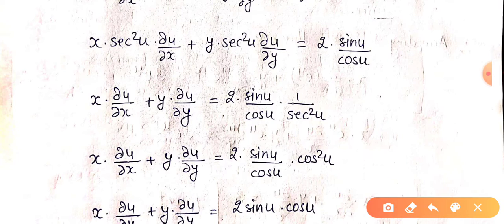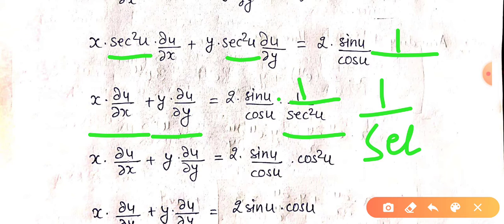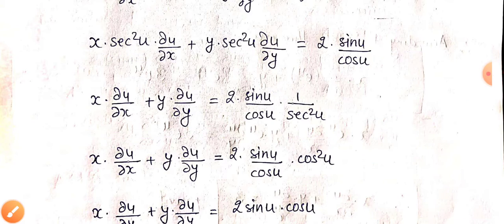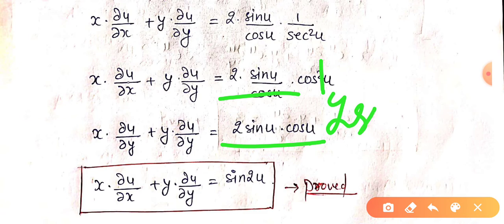Now sec²(u) is common on the left side, so: x times ∂u/∂x plus y times ∂u/∂y equals 2 sin(u) divided by cos(u), multiplied by 1 over sec²(u). The sec²(u) and cos²(u) terms cancel, leaving 2 sin(u) cos(u).